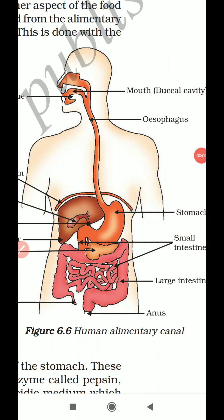Now let us learn about the third part of the alimentary canal, that is the stomach. The stomach is a muscular organ which expands when food enters into it. It is a very important organ in the process of digestion in humans. Let us study what actually happens to the bolus when it enters into the stomach.